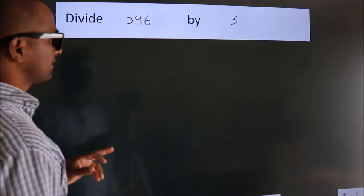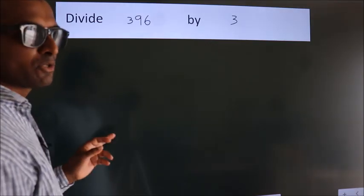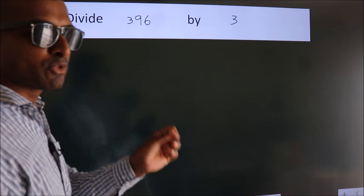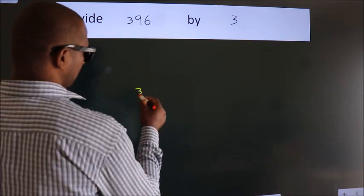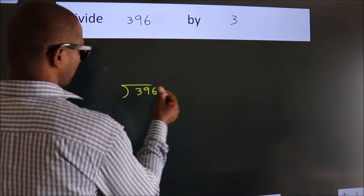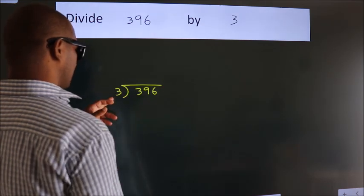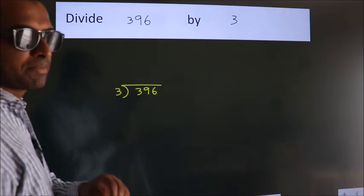Divide 396 by 3. To do this division, we should frame it in this way: 396 here, 3 here. This is your step 1.